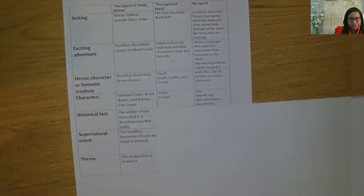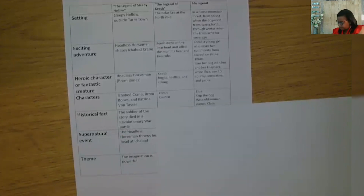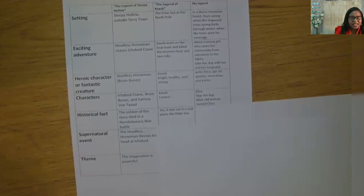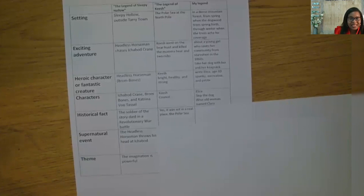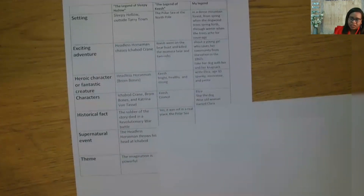On to historical facts. The Legend of Sleepy Hollow was set after the Revolutionary War and included a battle, so we know it was based on a real event. How was The Legend of Quiche based on a historical fact? Yes, that's right — it was set in a real place, the polar sea. Now time to consider the historical connection from my legend. Because I decided that my legend would be set in the 1800s, I can make a connection to the Civil War. The Civil War started in 1861 and ended in 1865. I think the community has a lack of food because of the war, so that would make sense. I'm going to write that in on my chart — connection to the Civil War.